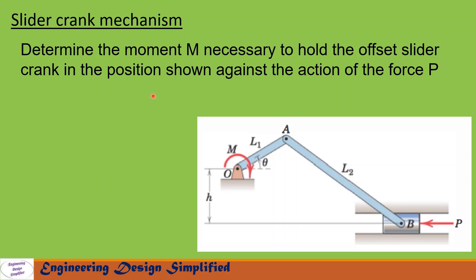We will determine the moment M necessary to hold the offset slider crank in the position shown against the action of force P. The offset is h, the crank length is l1, the angle between horizontal and the crank is theta, the coupler AB has length l2, and force P is applied on the piston at point B. We need to find the moment M about the crank required to hold this mechanism in position, and I will derive an expression in terms of M, P, l1, l2, theta, and h.